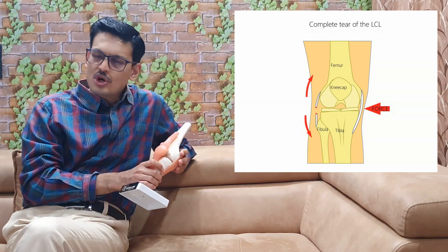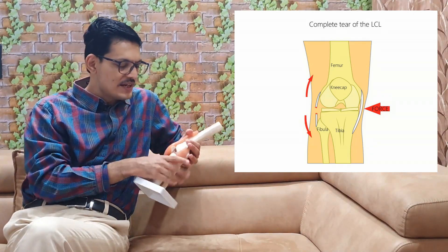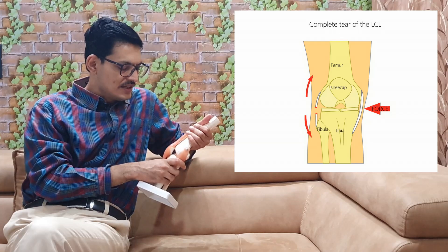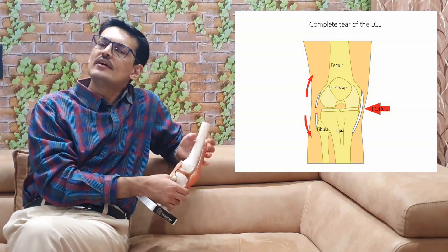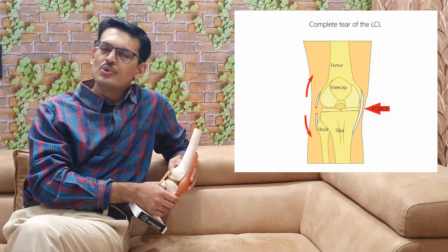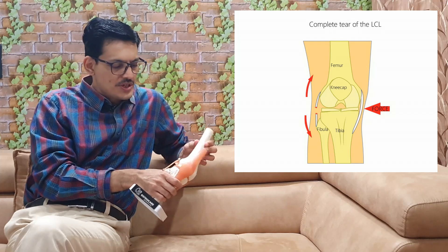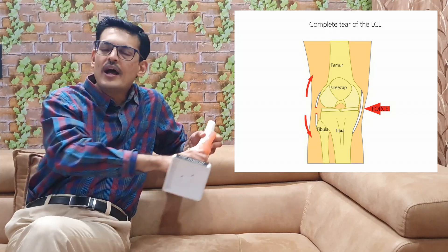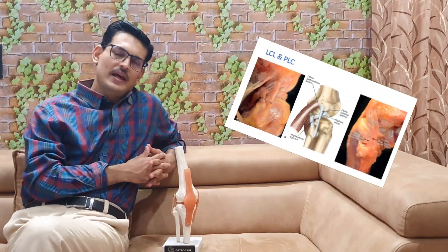The most common mechanism of injury is a hit on the medial side, causing the knee to open laterally and tear the lateral complex. You can also have a varus stress injury, external tibial rotation injuries, or a hyperextension injury, all of which can lead to damage to the LCL.